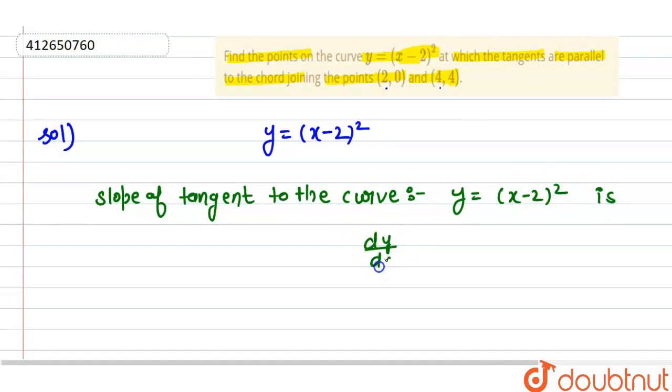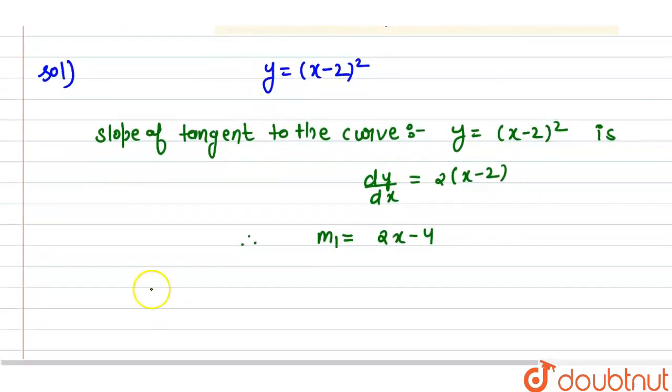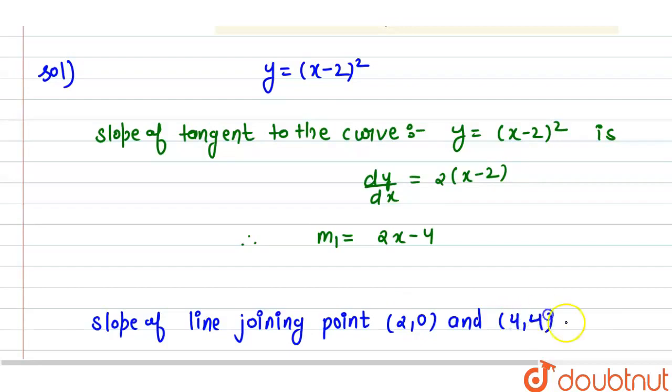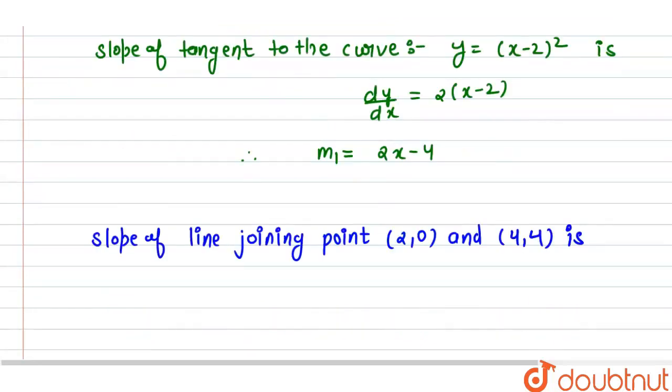Now, the slope of the line joining points (2,0) and (4,4) is given by the formula: m equals (y₂ minus y₁) upon (x₂ minus x₁). So here (2,0) is (x₁, y₁) and (4,4) is (x₂, y₂).